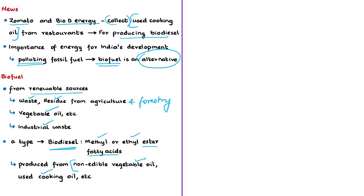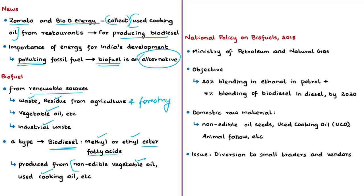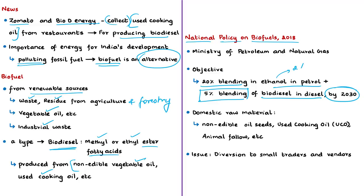The Ministry of Petroleum and Natural Gas introduced a National Policy on Biofuels in 2018. One of its most important objectives is an indicative target proposed to be achieved by 2030: 20 percent blending of ethanol in petrol and 5 percent blending of biodiesel in diesel. At present, the ethanol blending percentage in petrol is around 2 percent and biodiesel blending in diesel is less than 0.1 percent.